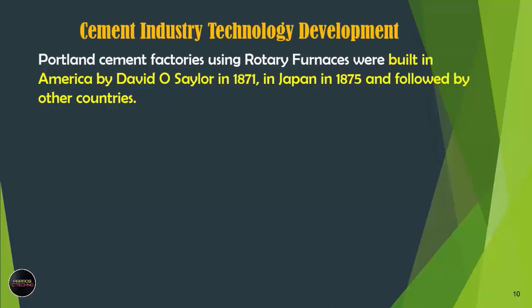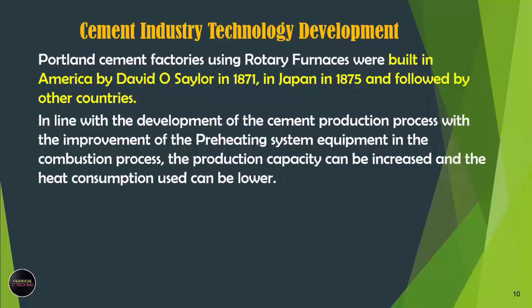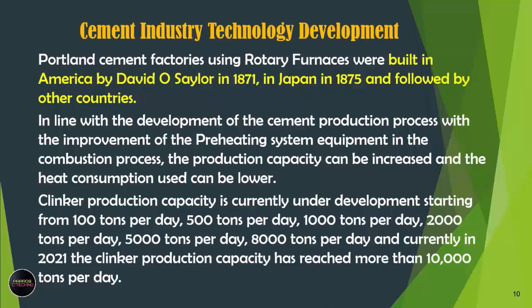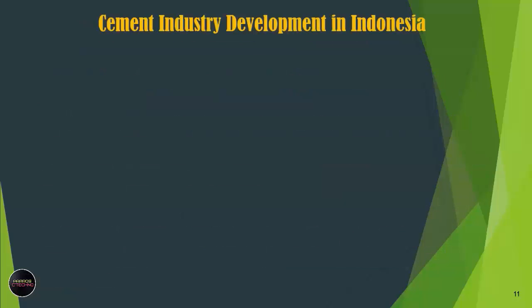Cement industry technology development: Portland cement factories using rotary kiln were built in America by David O. Saylor in 1871, in Japan in 1875, and followed by other countries. With improvements to the preheating system equipment in the combustion process, production capacity increased and heat consumption decreased. Clinker production capacity developed progressively from 100 tons per day, 500, 1,000, 2,000, 5,000, 8,000 tons per day, and currently in 2021 the clinker production capacity has reached more than 10,000 tons per day.